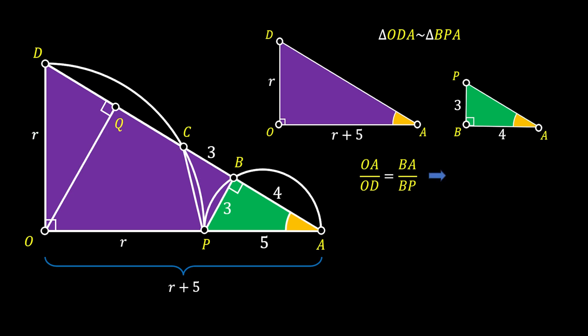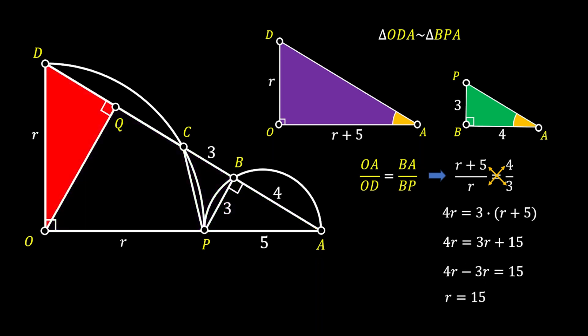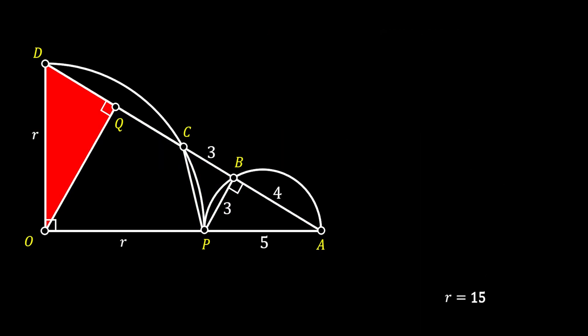Substituting our values, we get that (R + 5) / R must equal 4 / 3. Cross multiplying and simplifying, putting the unknowns on the left side of the equation, we finally get that the radius of our quarter circle is equal to 15.